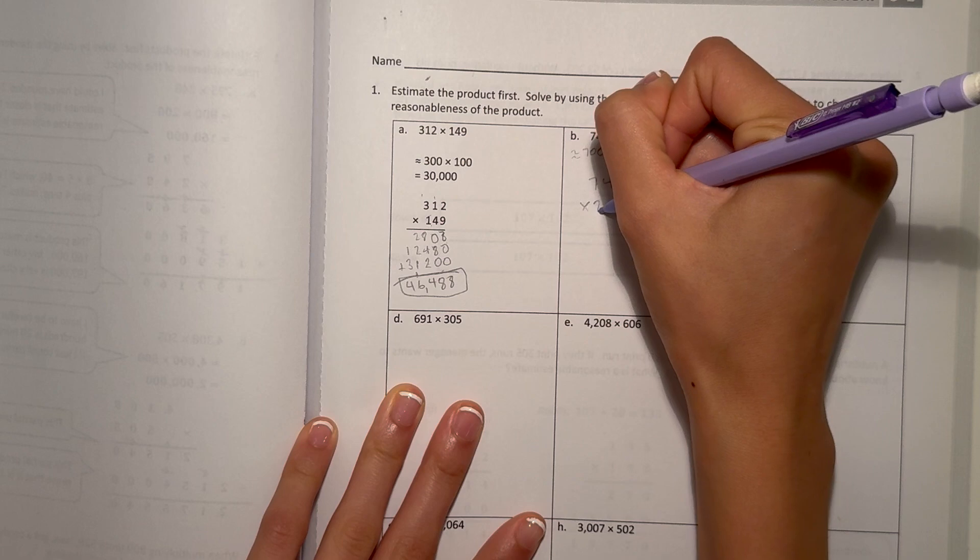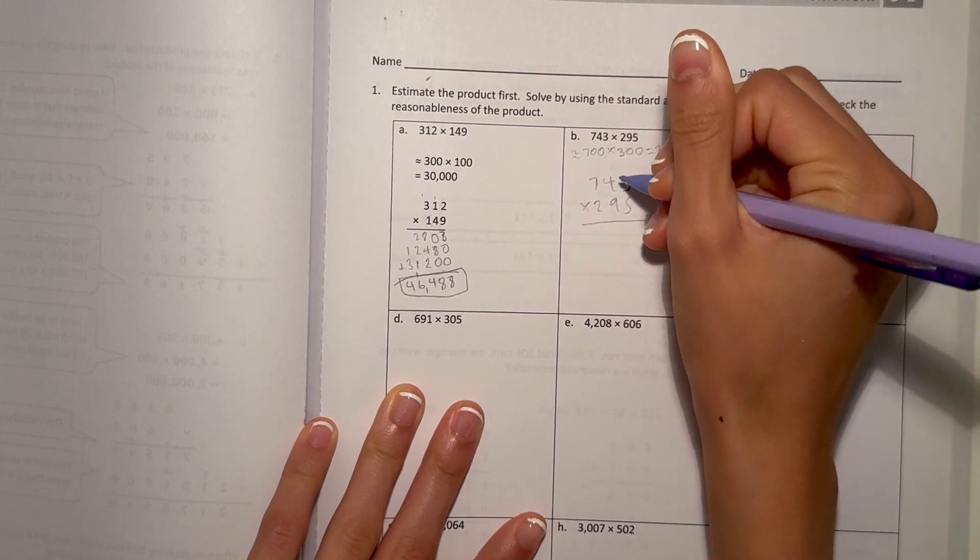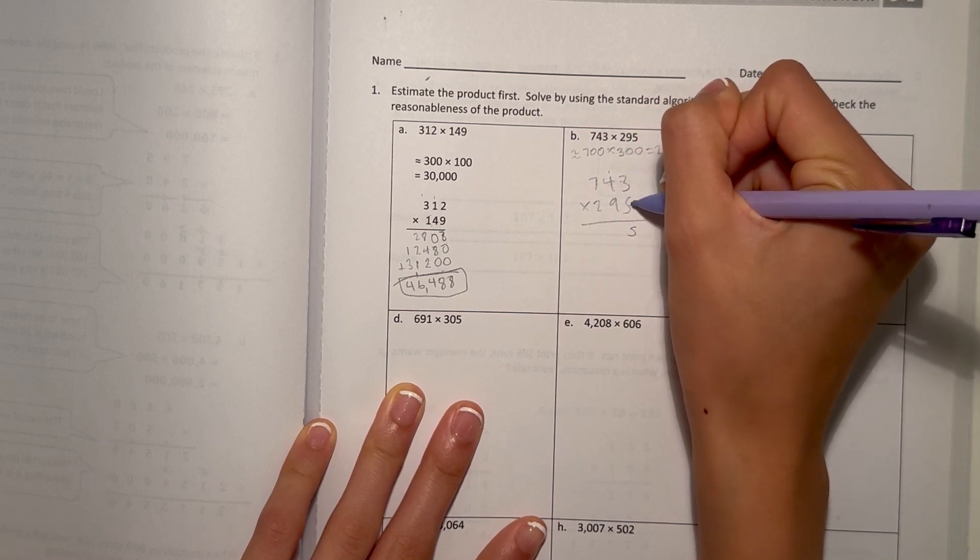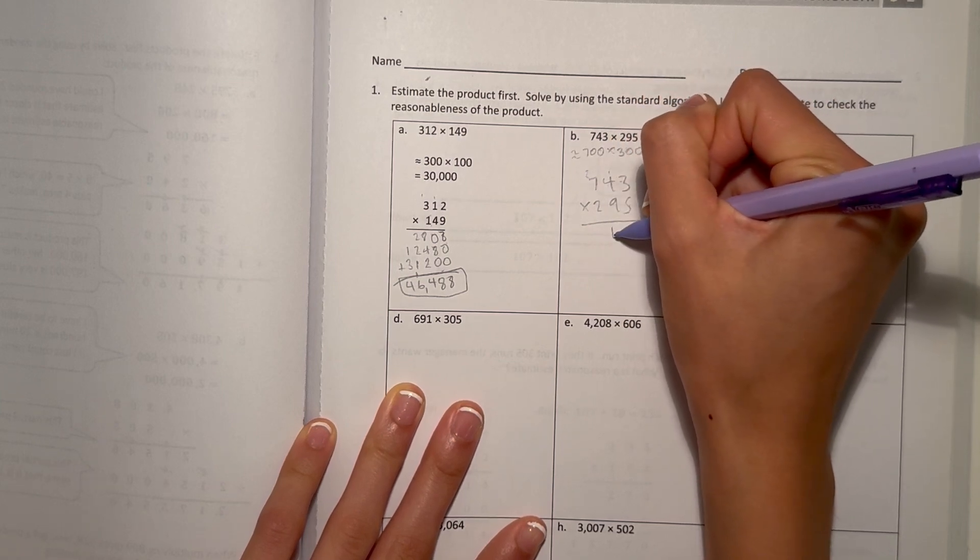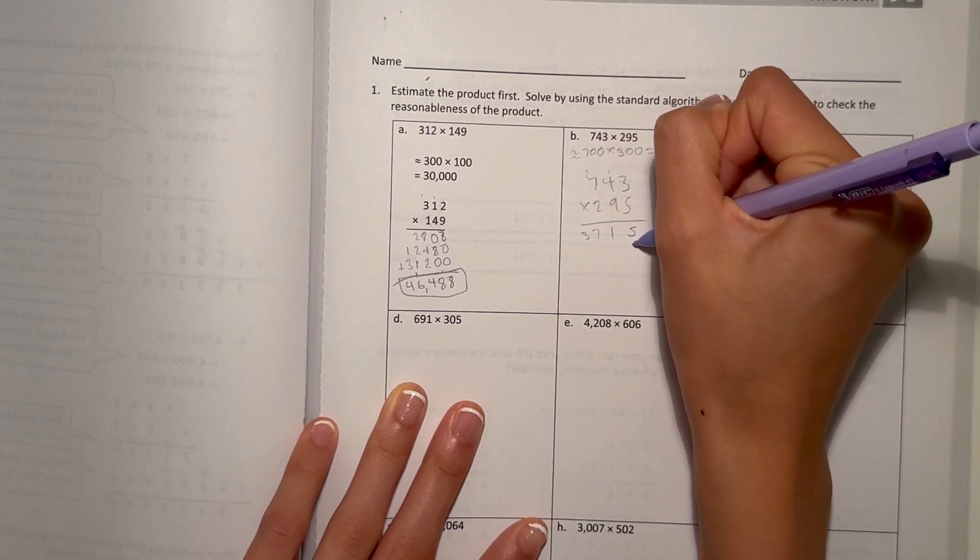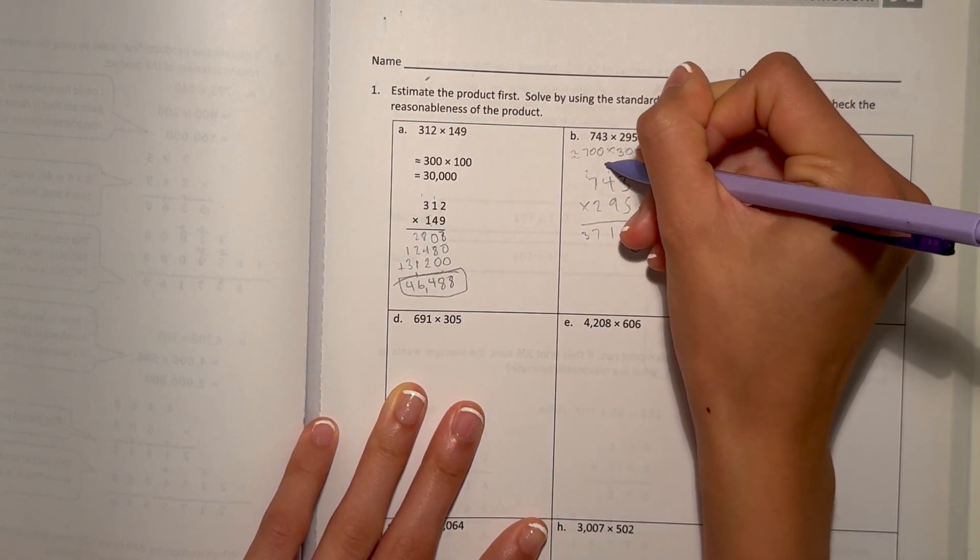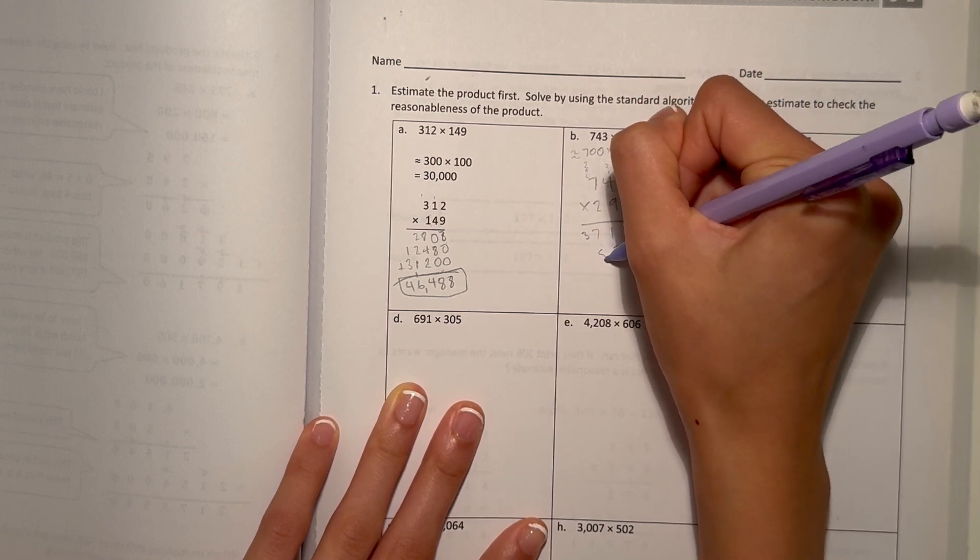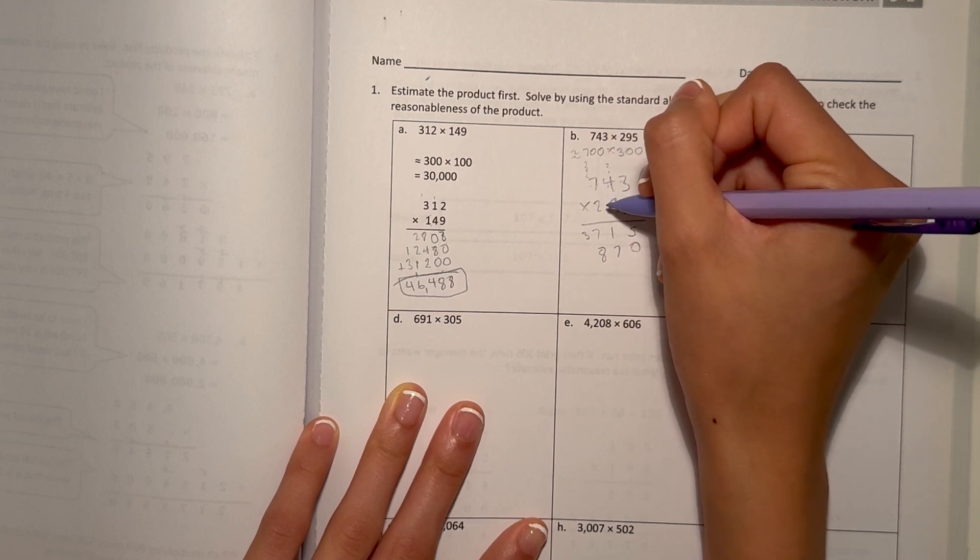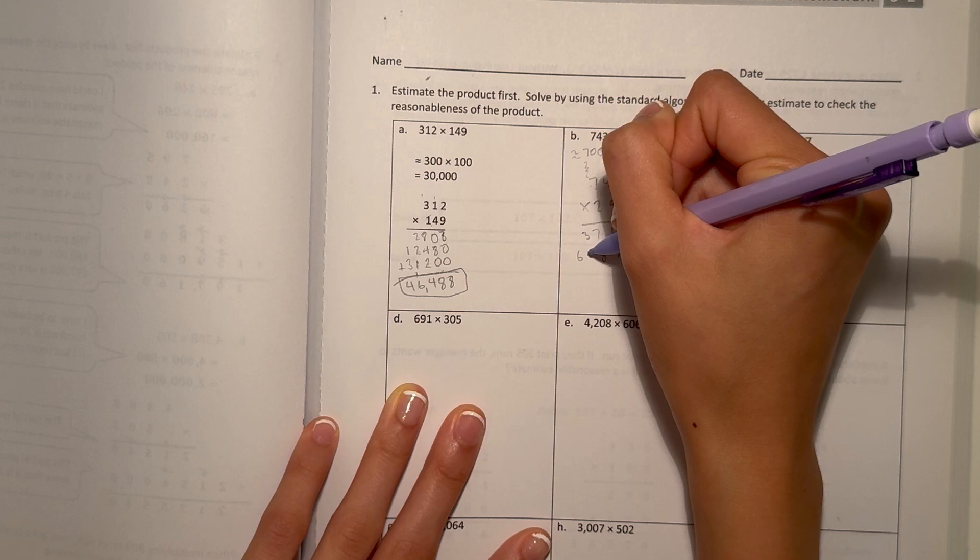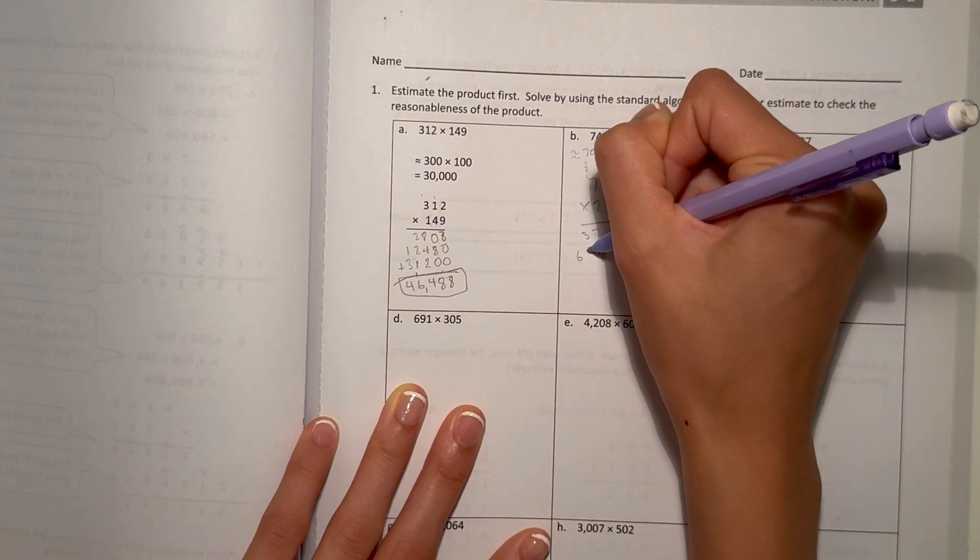743 times 295. 3 times 5 is 15. 4 times 5 is 20, plus 1 is 21. And 7 times 5 is 35, plus 2 is 37. Now add a 0. 9 times 3 is 27. 9 times 4 is 36, plus 2 is 38. And 9 times 7 is 63, plus 3 is 66.